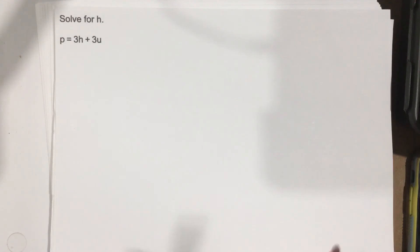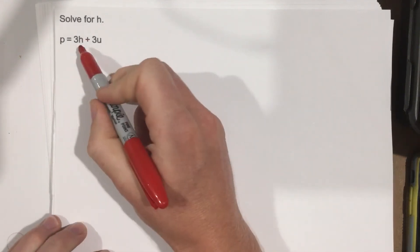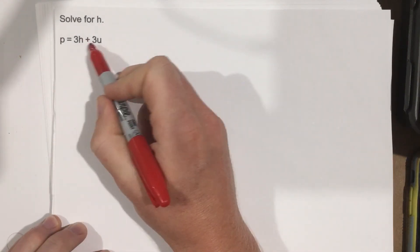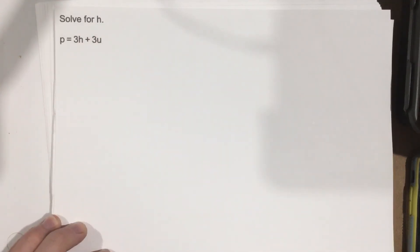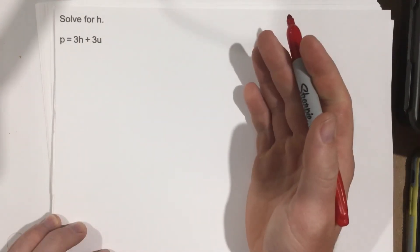So if we want h to be by itself, h equals something, we just need to get rid of the 3u and the 3. So we just need to do a normal solving of an equation.